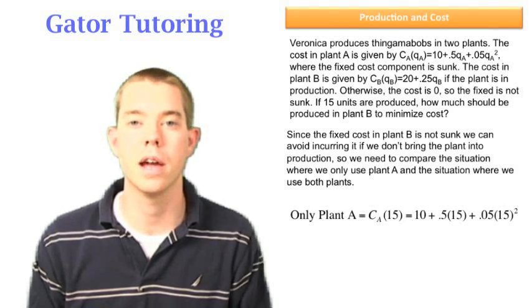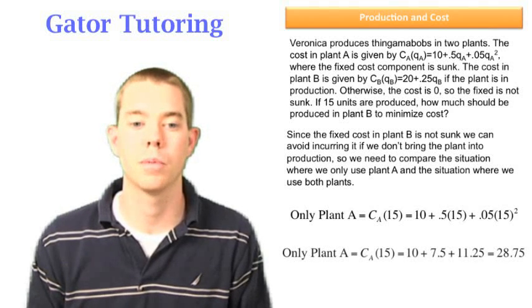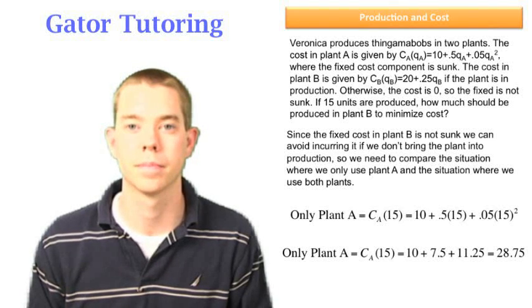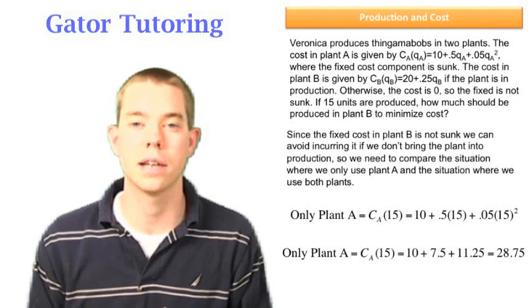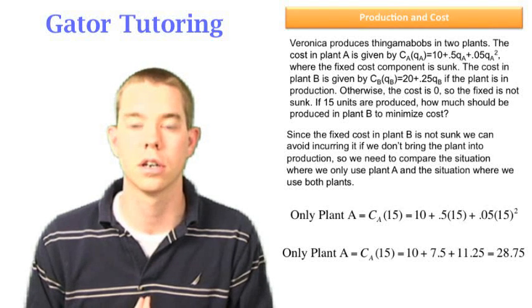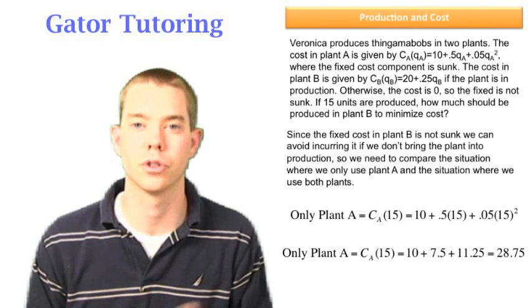If we only use plant A, we plug 15 into our total cost for plant A. We work this out and see that only in plant A, it's going to cost us $28.75. Notice we've included that $10 fixed cost here. Even though that cost is already sunk, we've included it in our total cost, and this is going to play an important role.